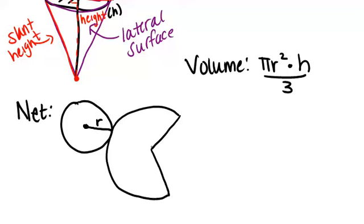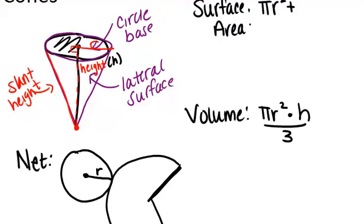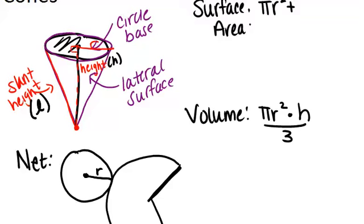Now the radius of this larger circle is actually the slant height of the original cone which we usually will notate with the letter l. So this radius is l.